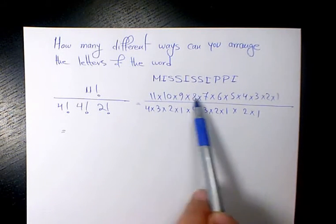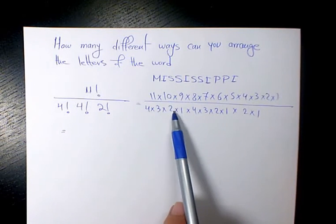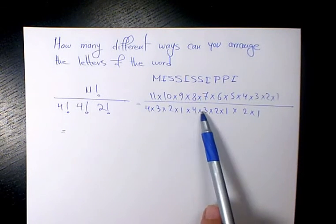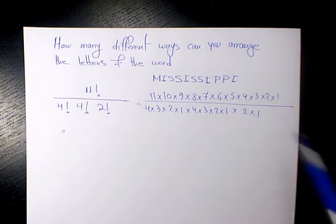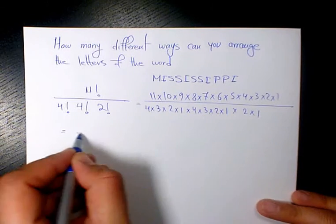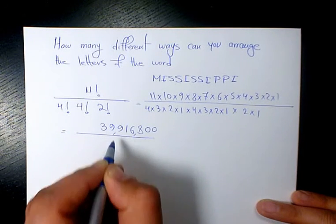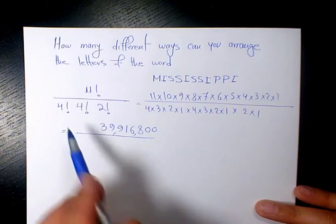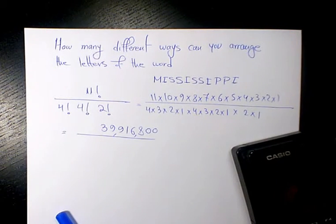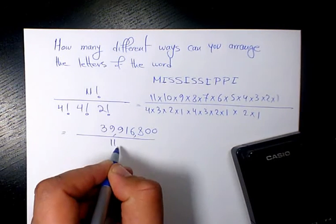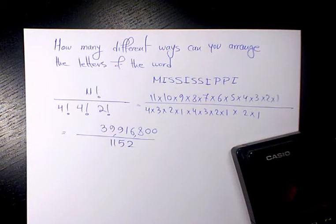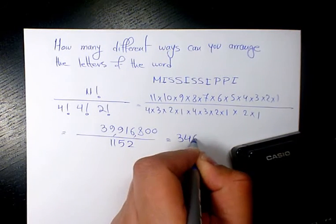Four factorial is four times three times two times one, and you need to do it twice again: four times three times two times one, and then two factorial which is two times one. And when you calculate it, the numerator is going to be 39,916,800, which is going to be thirty-nine million nine hundred sixteen thousand eight hundred. And in the denominator I have four times three times two times three, that's gonna be 1152. So 39,916,800 divided by 1152, that will be 34,650 different ways to rearrange this word.